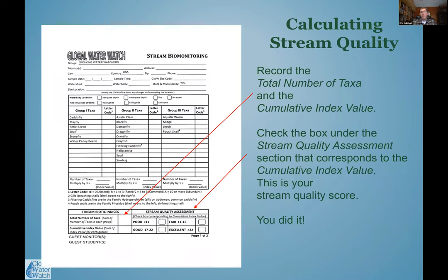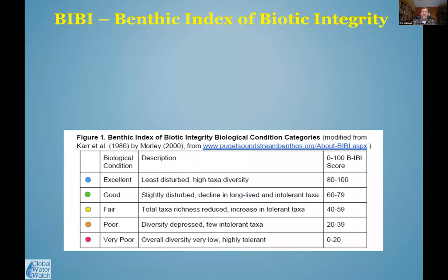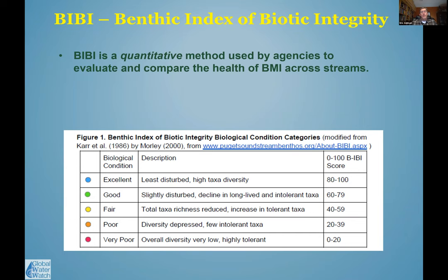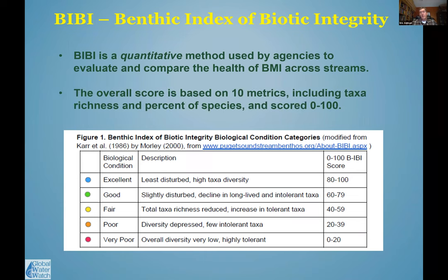BIBI is a more quantitative method used primarily by scientific agencies and some nonprofits to evaluate and compare the health of benthic macroinvertebrate communities across streams. The overall score is based on several metrics including taxa richness — how many different taxa were found — and percent of species that were pollution tolerant versus intolerant. Based on those metrics, a score of zero to 100 is generated.